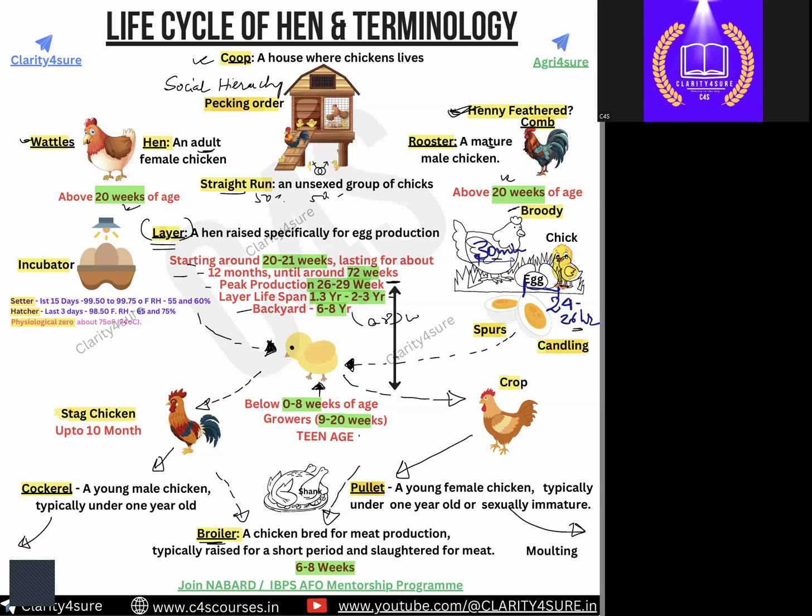The egg needs particular warmth and temperature. In natural conditions the mother bird provides warmth to the eggs. In commercial cases, eggs are kept in an instrument called an incubator. The incubator can be divided into two types: the setter and the hatcher. The setter is where eggs are kept for the first 15 days, and the hatcher is where eggs are kept for the last three days just before hatching.